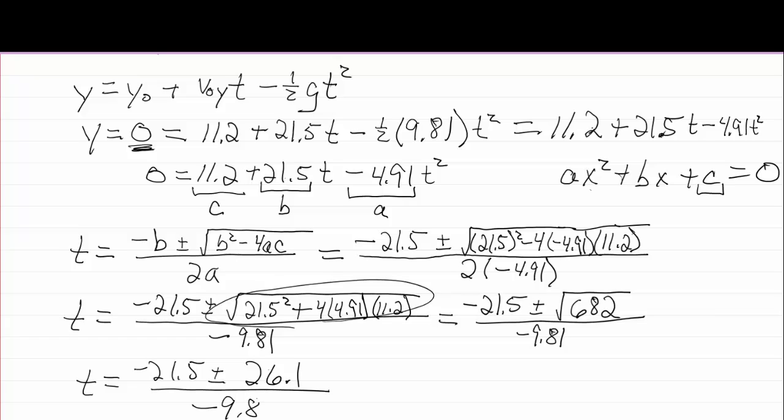So if I go one small step farther with simplifying I'll get t equals minus 21.5 plus or minus the square root of 682. And that'll be over minus 9.81.